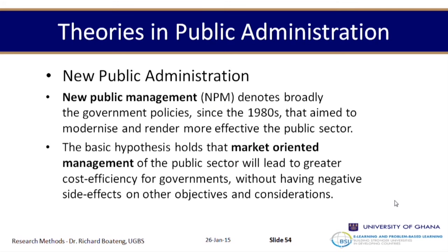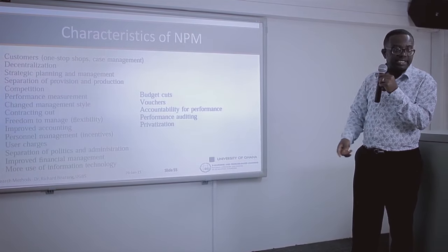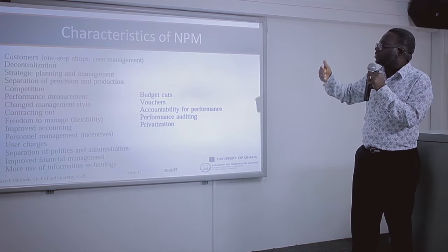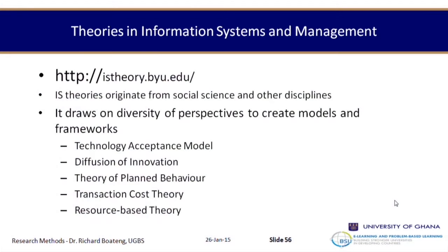In public administration, new public management (NPM) addresses ways of modernizing the public sector, advocating market orientation, customer-centricity, and decentralization. Characteristics of NPM include budget cuts, accountability for performance, privatization, user charges, and separation of politics from administration — changes Ghana has experienced through privatization initiatives. In information systems, theories often originate from social science and other disciplines, including the Theory of Planned Behavior, the Technology Acceptance Model (which identifies perceived ease of use and perceived usefulness as key determinants of technology adoption), diffusion of innovation theory, transaction cost theory, and the resource-based theory.